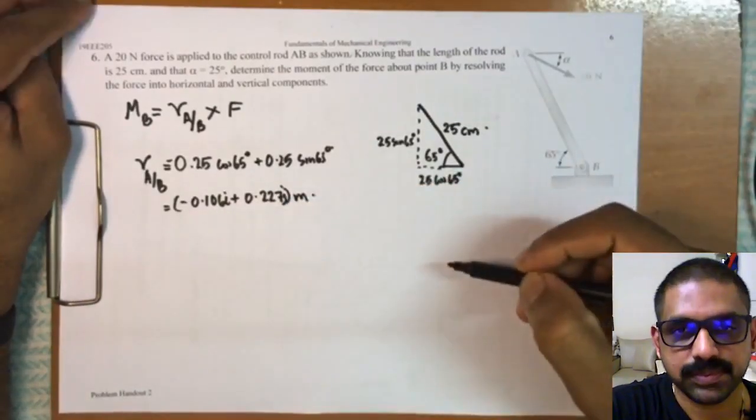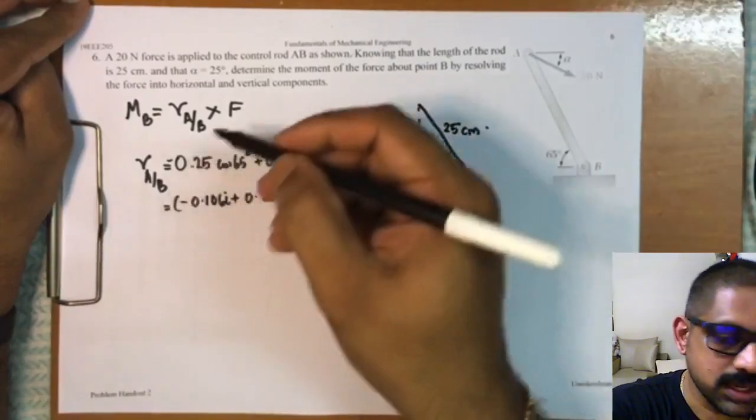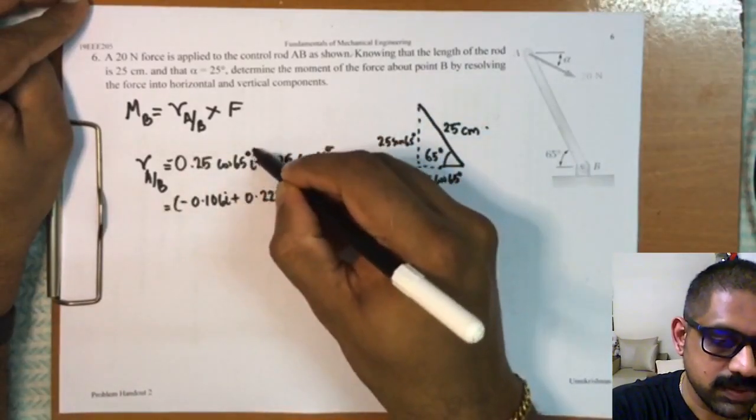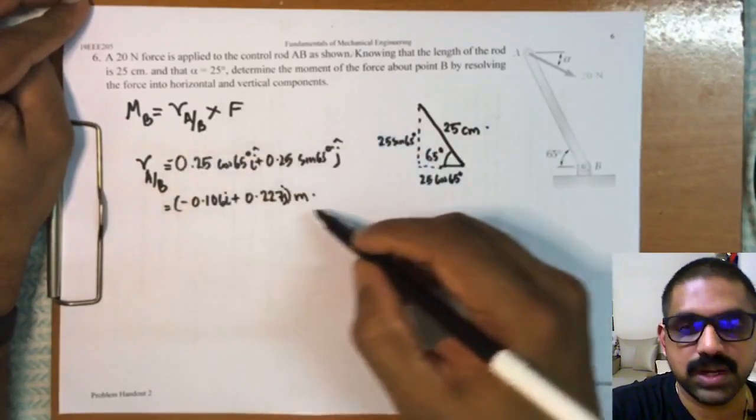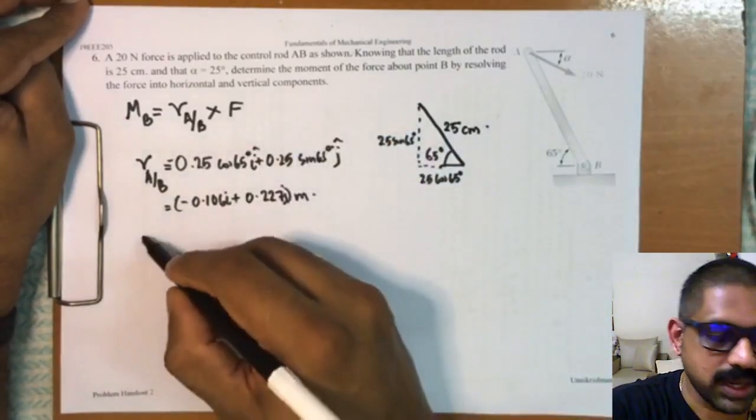Now let us consider, I have not mentioned here, so i and j. So let us now consider here the force vector F.